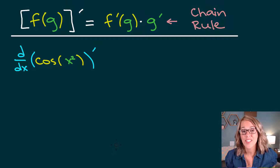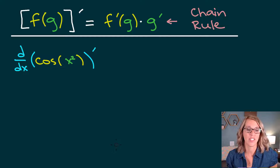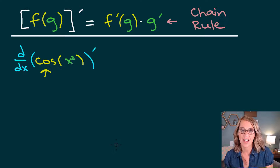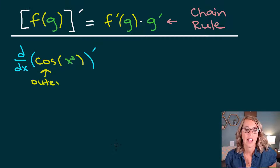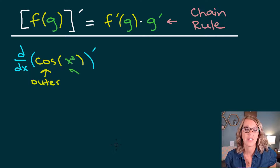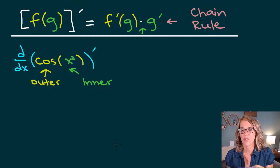Let's take a look at the chain rule. The chain rule acts on composition of functions or layers. In this example, we've got the derivative of cosine of x squared. Cosine is the outer layer, and x squared is that inner layer — that composition of functions. We call it a chain rule because we're multiplying that chain through.